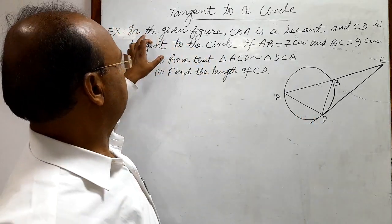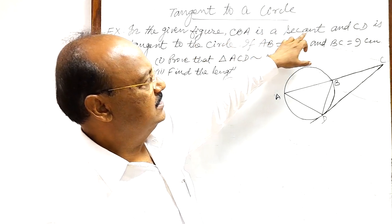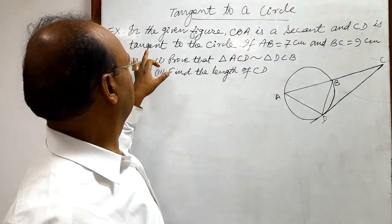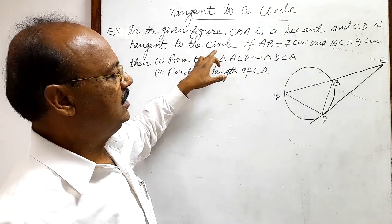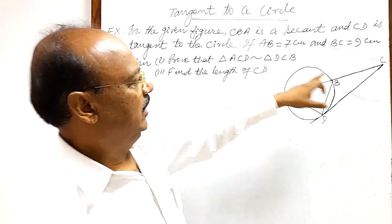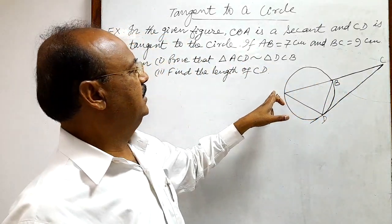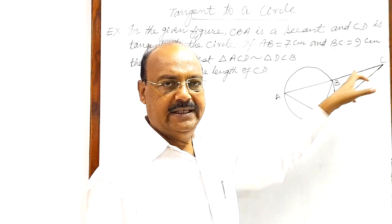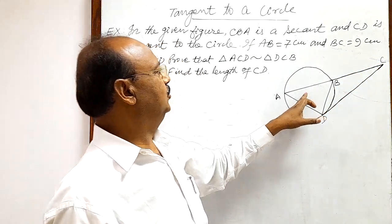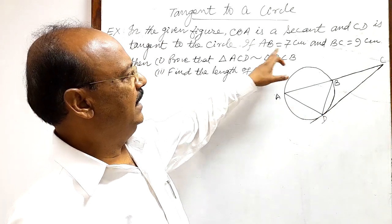Here the question is: in the given figure, CBA is a secant and CD is tangent to the circle. You see here CBA is a secant and CD is a tangent to this given circle. If AB is 7 cm...